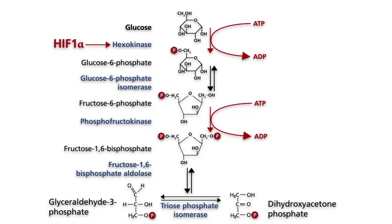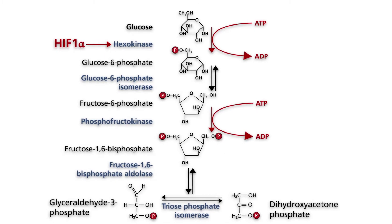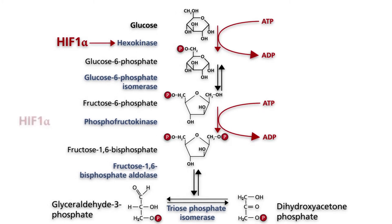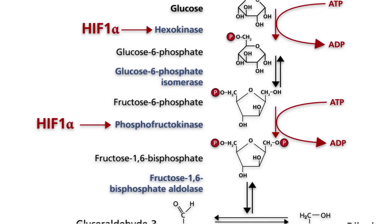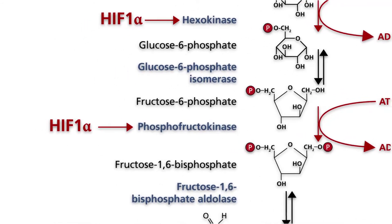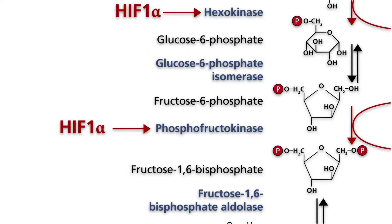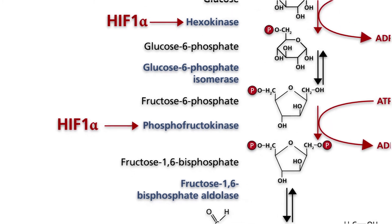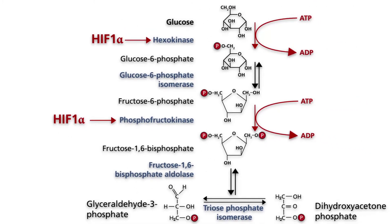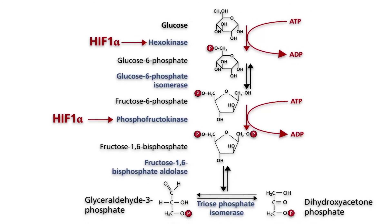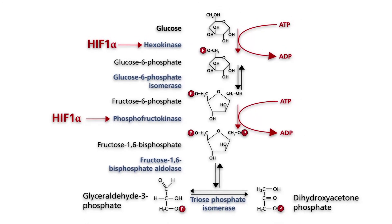The next enzyme stimulated by HIF-1-alpha is phosphofructokinase. This enzyme regulates the throughput of glucose and thus acts as a pace-setter of glycolysis. Phosphofructokinase catalyzes the irreversible formation of fructose 1,6-bisphosphate from fructose 6-phosphate.